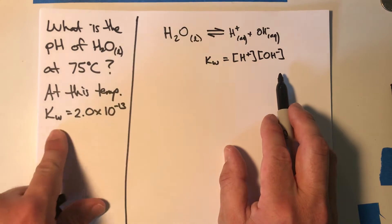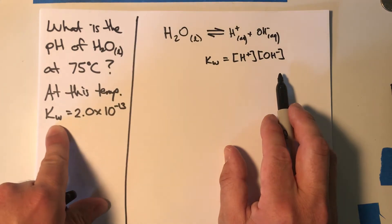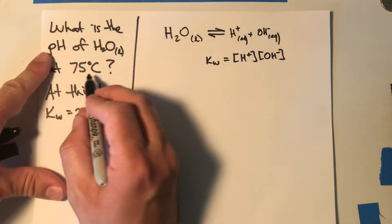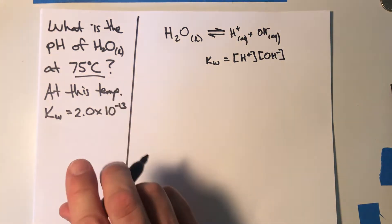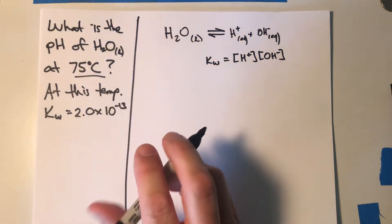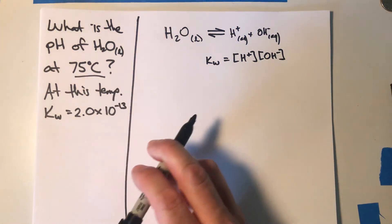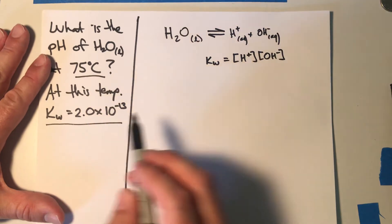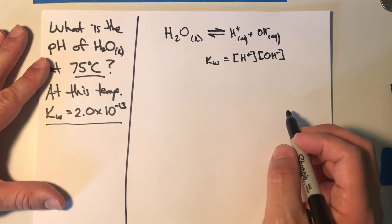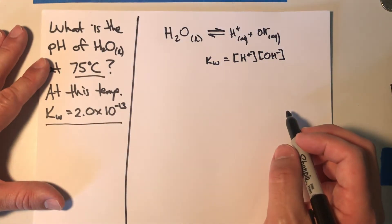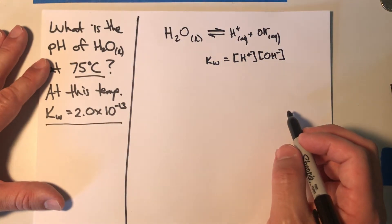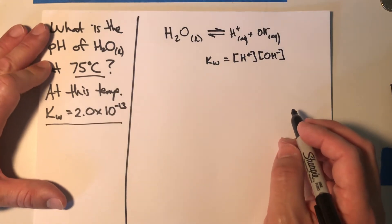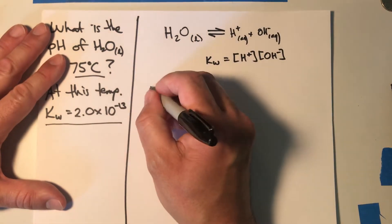In this question we're told that we're at 75 degrees Celsius. Normally we'd have to look up the value of Kw at that temperature, but we've been given that value in the problem. So we're going to do the same thing we always do — we're going to set up a rice table.